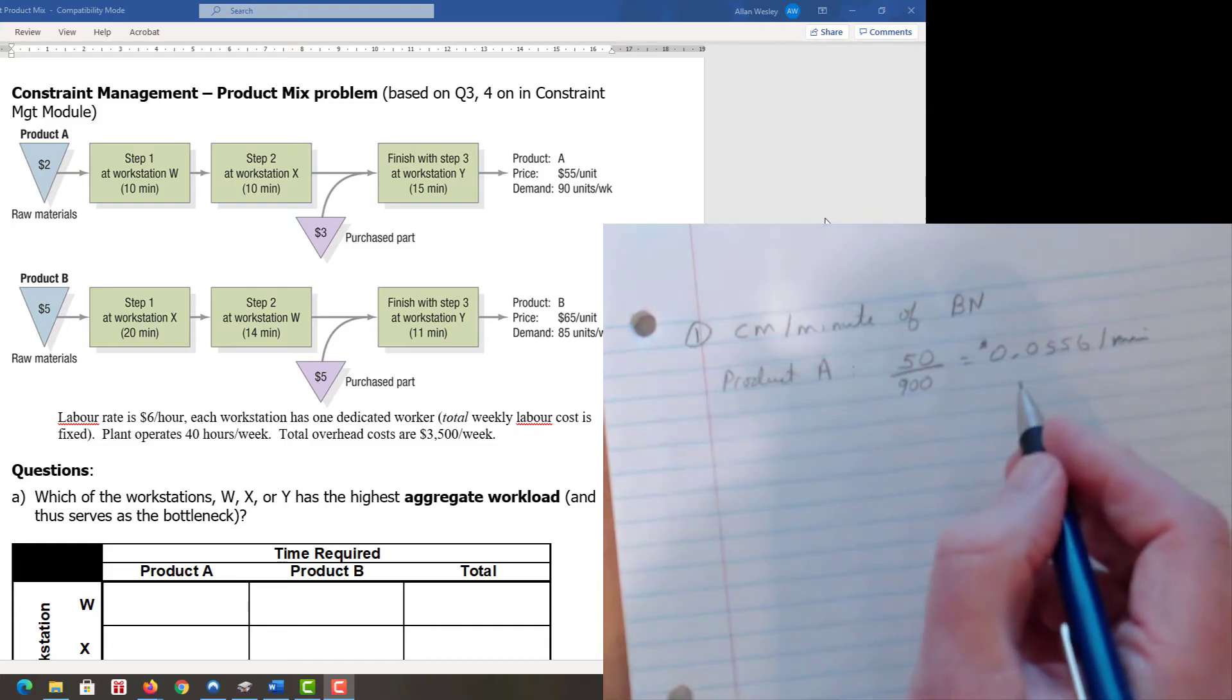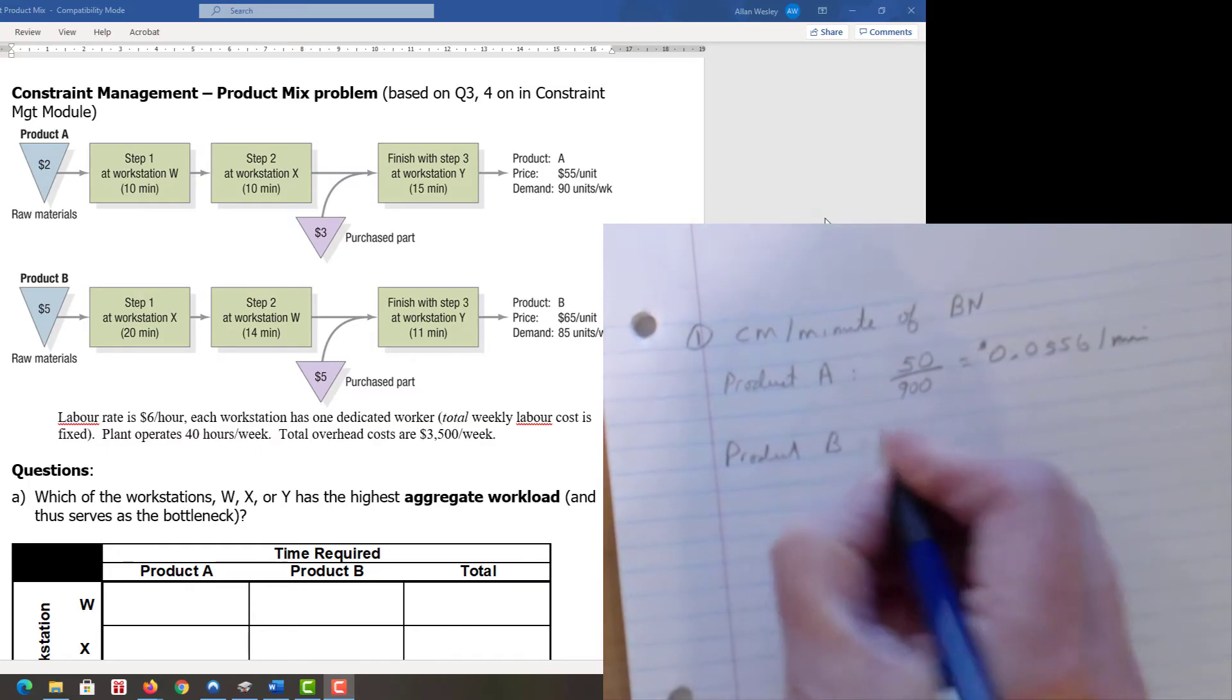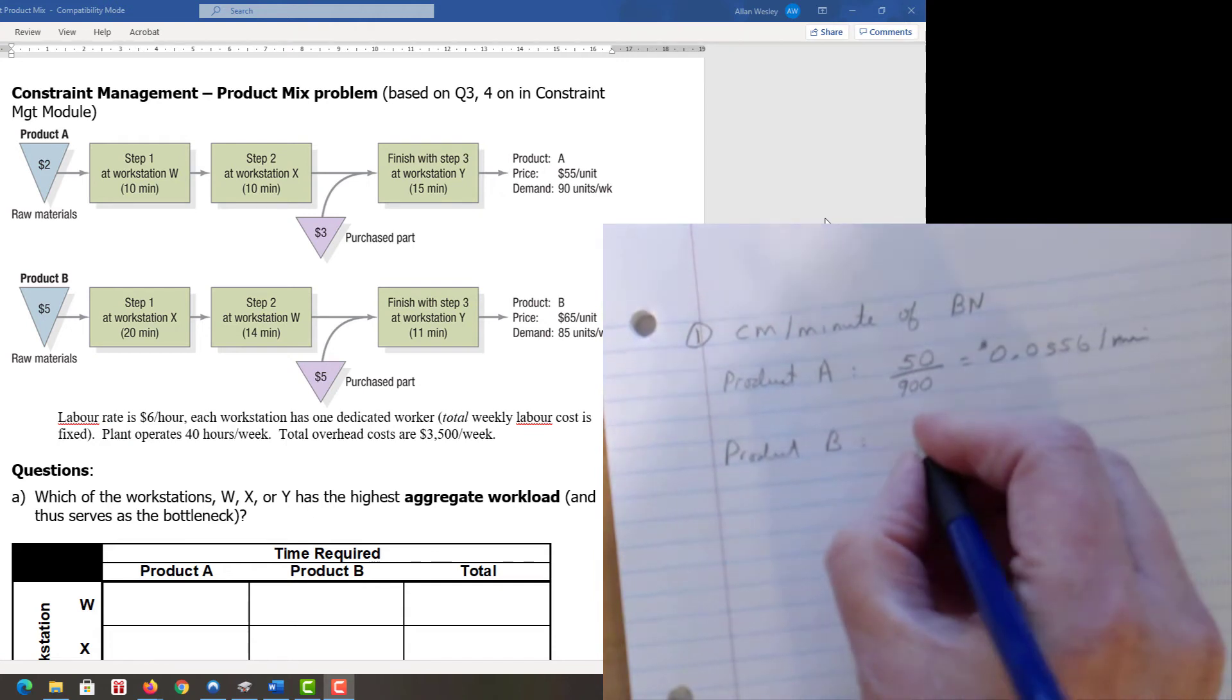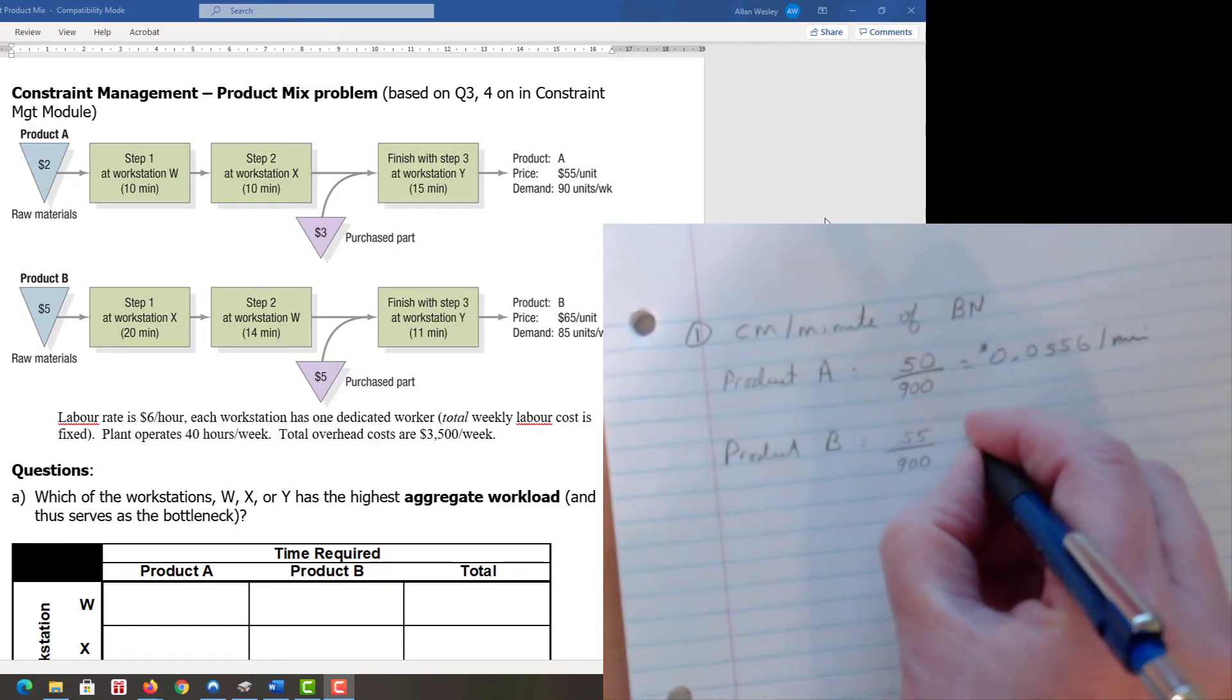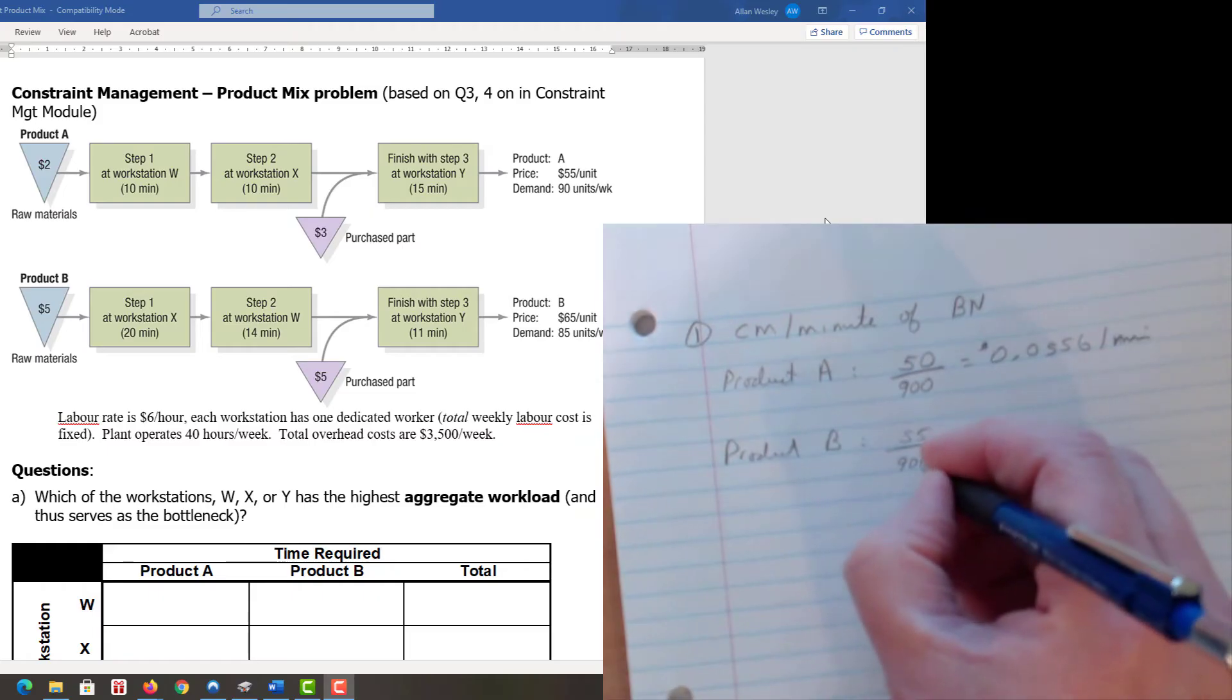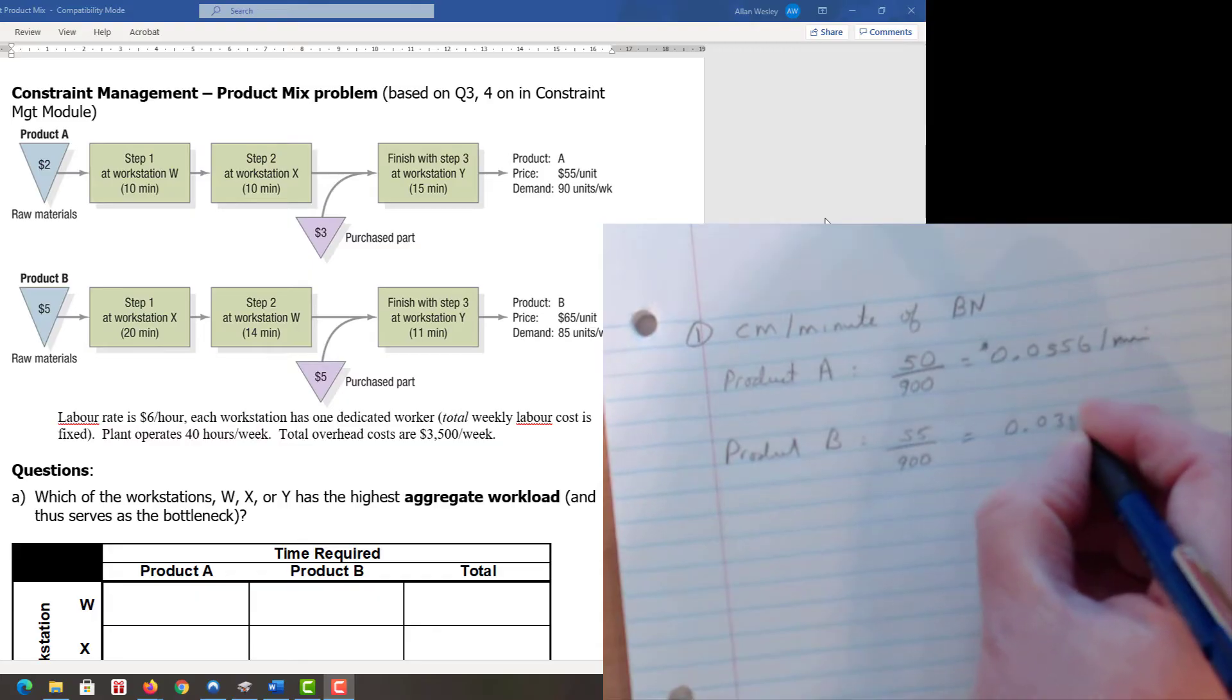This tells us what time at the bottleneck resource is worth to produce A—about five and a half cents per minute. It also tells us the maximum extra we would pay to get more of it. For product B, it's 55 dollars divided by 1,700 minutes.